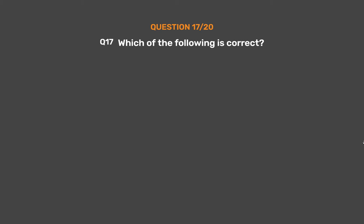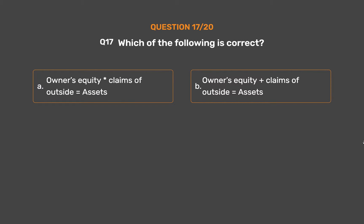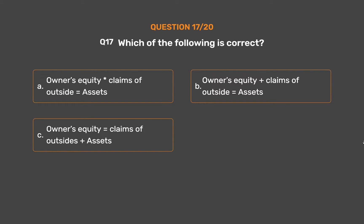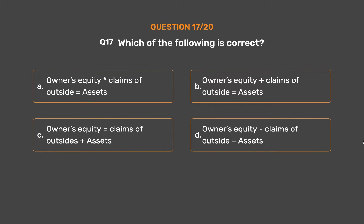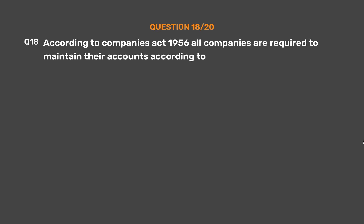Question No. 17: Which of the following is correct? Option A: Owner's equity and claims of outsiders equals assets. Option B: Owner's equity plus claims of outsiders equals assets. Option C: Owner's equity equals claims of outsiders plus assets. Option D: Owner's equity and claims of outsiders equals assets. The correct answer is Option B: Owner's equity plus claims of outsiders equals assets.